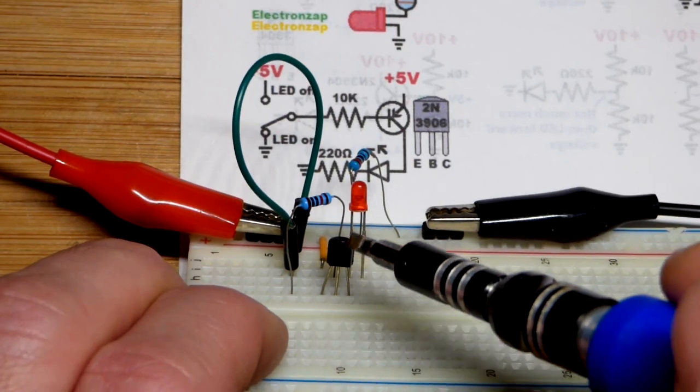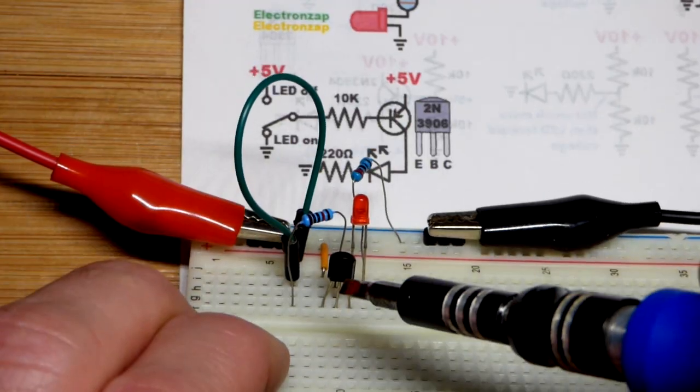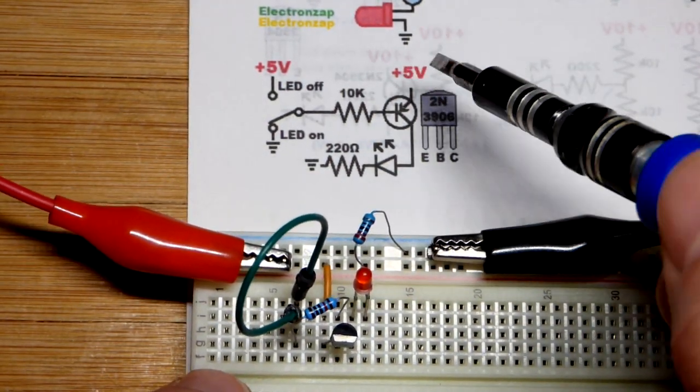So now, here we have a PNP bipolar junction transistor 2N3906. Emitter base collector, flat side is facing us. Emitter goes directly to the positive supply.